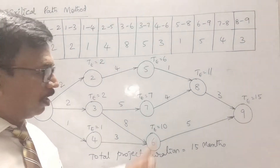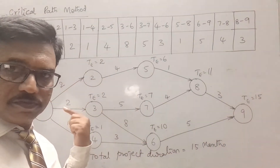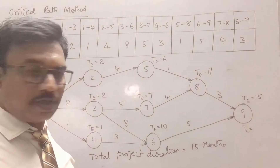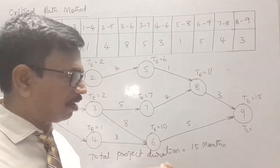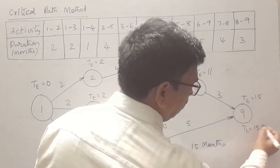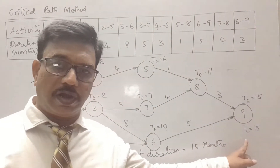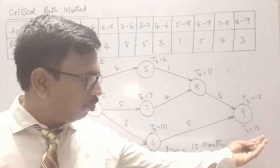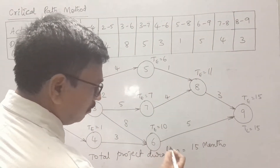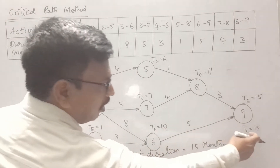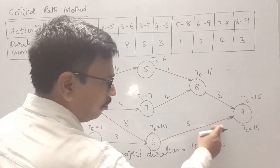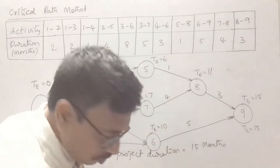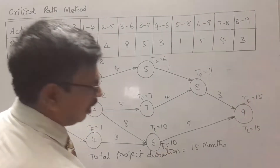Now coming to the critical path, we move backwards from the last node to the first node to find the latest time at which a particular event can be reached. TE equals TL for the last event to avoid delay in the project duration, so TL = 15 at node 9. Moving backwards: for node 6 it is 15 minus 5 = 10, so TE equals TL equals 10 at node 6.